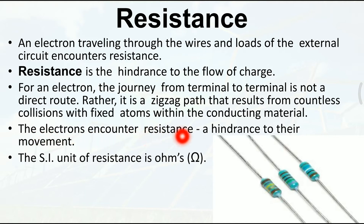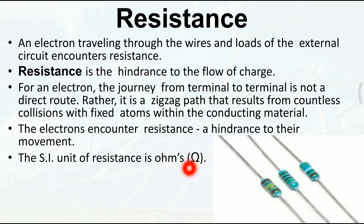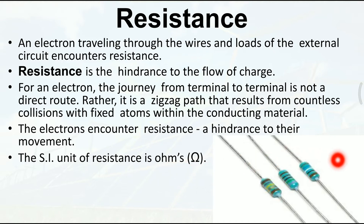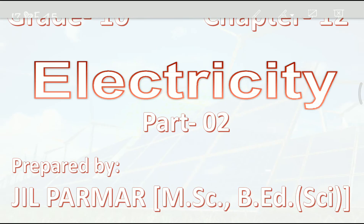The electron encounters resistance - a hindrance to their movement. Electron के बीच-बीच में जो अड़चनें आती हैं, that is resistance. The SI unit of resistance is Ohm. Ohm's law complete करते समय proportional की जगह पर constant resistance लिया था, इसलिए resistance का SI unit Ohm है। Resistance को Ohm में measure किया जाता है - 1 Ohm, 2 Ohm, 5 Ohm। यहाँ resistor की image है - इतना छोटा सा होता है यह resistance।